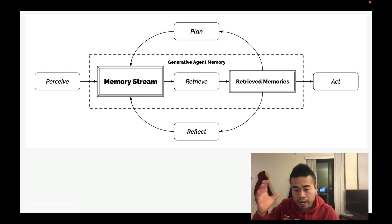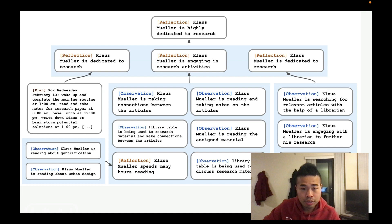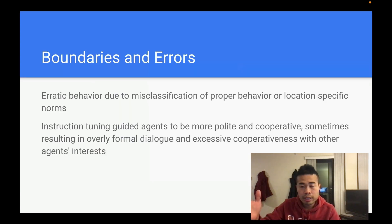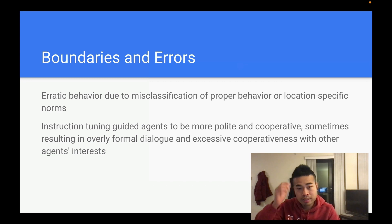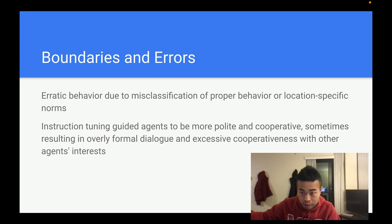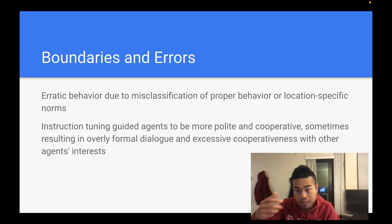This hierarchical reflection has different levels of reflection building on each other. These examples are crazy — it feels like a very, very good simulation. But sometimes they still make errors. For example, some erratic behavior is due to misclassification of proper behavior or location-specific norms. They may play baseball in a restaurant because they didn't know you shouldn't do that there.